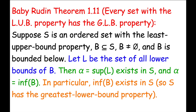Theorem 1.11 in Baby Rudin answers this question in the affirmative. Yes, every set with the least upper bound property has the greatest lower bound property. You can see it's a pretty long statement — let's break it down. Suppose S is an ordered set with the least upper bound property. Also suppose that B is a non-empty subset of S which is bounded below. Therefore, there will be a non-empty set L of lower bounds of B, and we can conclude that the supremum of L exists in S, and this supremum is also the infimum of B. In particular, inf of B exists in S, so S has the greatest lower bound property.